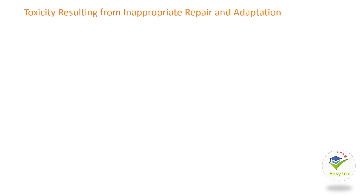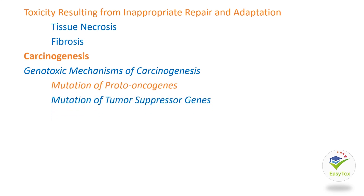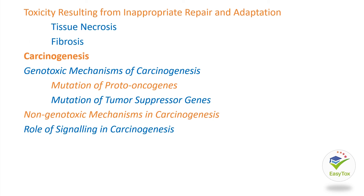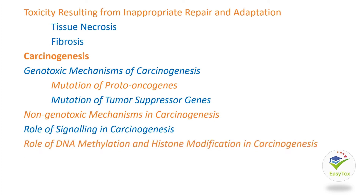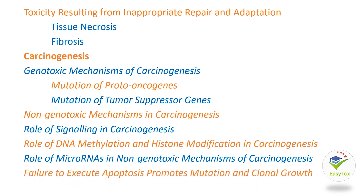Toxicity Resulting from Inappropriate Repair and Adaptation includes Tissue Necrosis, Fibrosis, and Carcinogenesis. This section discusses: Genotoxic Mechanisms of Carcinogenesis, mutation of proto-oncogenes, mutation of tumor suppressor genes, non-genotoxic mechanisms in carcinogenesis, role of signaling in carcinogenesis, role of DNA methylation and histone modification in carcinogenesis, role of microRNA in non-genotoxic mechanisms of carcinogenesis, and failure to execute apoptosis promotes mutation and clonal growth.